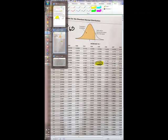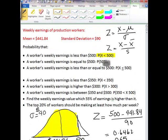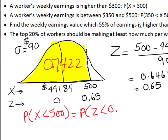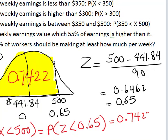Going back to our graph, what we just did was find this yellow area to be 0.7422. So probability that x is less than 500 is really equal to the probability that z is less than 0.65. And we found that using the table, we found that value to be 0.7422. Where approximately 74% of earnings happen to be less than 500 dollars.